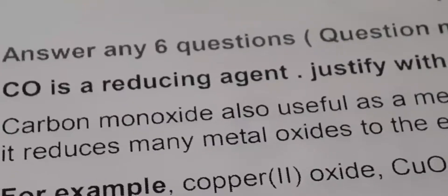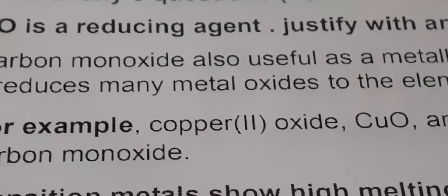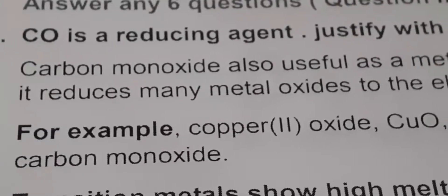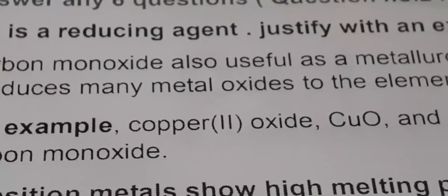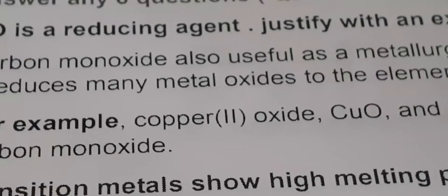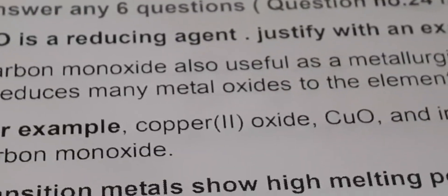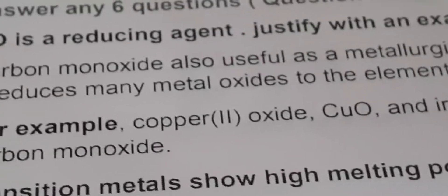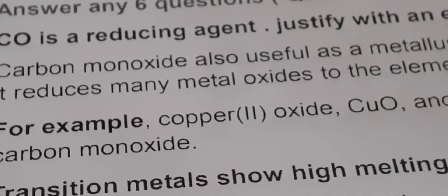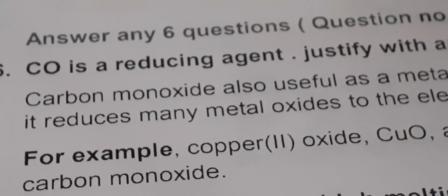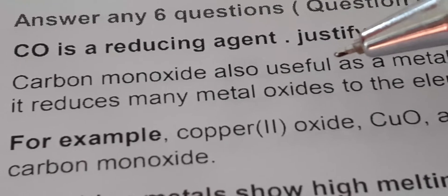Justify with an example. Carbon Monoxide is a Reducing Agent. The Carbon Monoxide is useful to reduce the Metal Oxide at Elevated Temperature or High Temperature. That's why Carbon Monoxide is a good Reducing Agent.